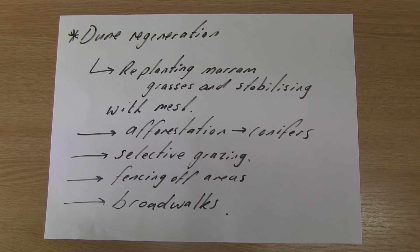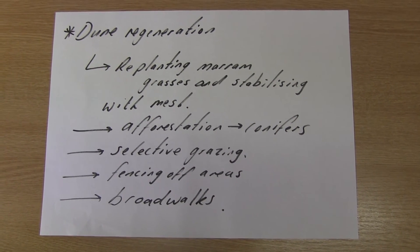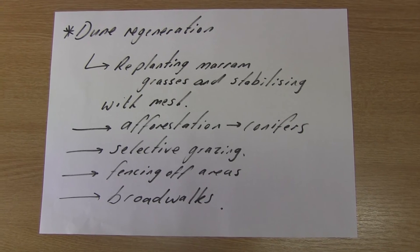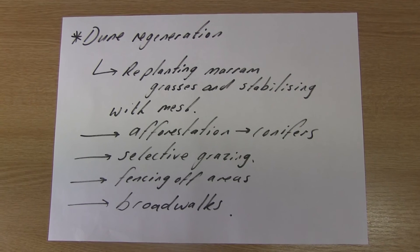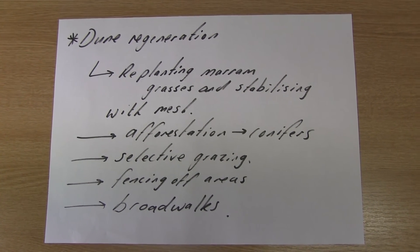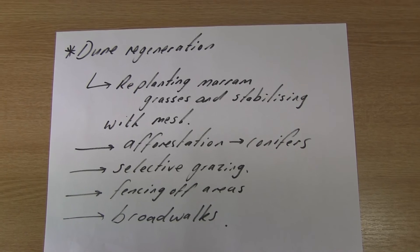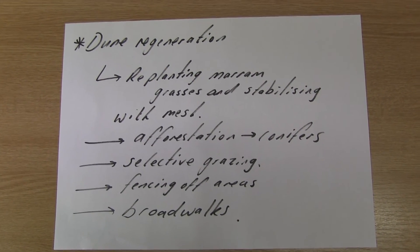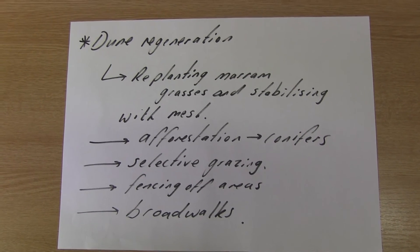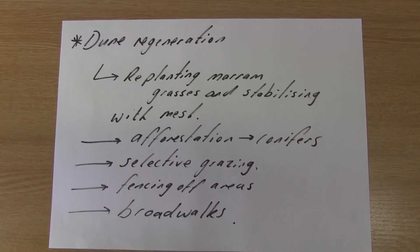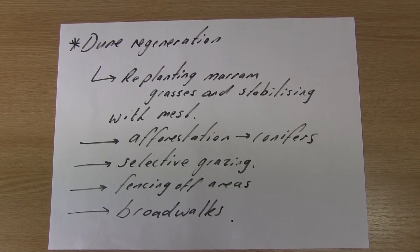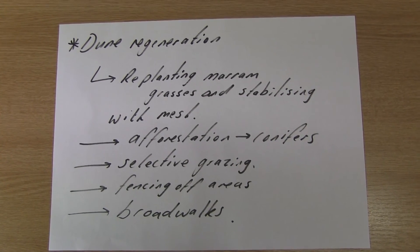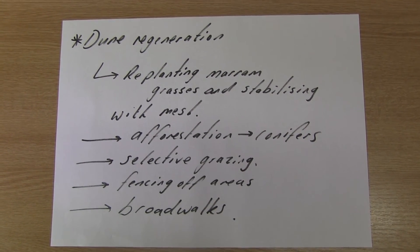Other dune regeneration strategies include using mesh to keep dunes together and prevent crumbling, afforestation — planting conifers which do a better job at binding sand dunes together due to their hardiness — selective grazing by fencing off areas so tourists and animals can't access and overgraze, and finally boardwalks, where wooden planks are laid down for tourists and people to walk on so they don't destroy the sand dune ecosystem.